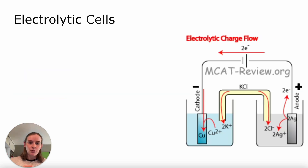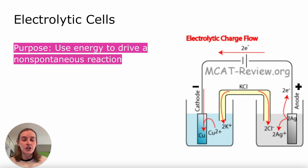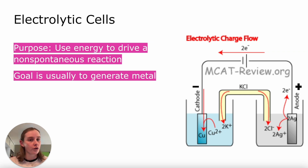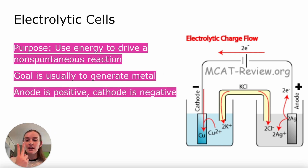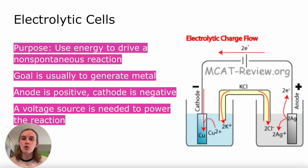Next, electrolytic cells. The purpose of these cells is to use energy to drive a non-spontaneous reaction — often to generate a metal or some substance that might be valuable for later use. Here, as I mentioned, it is flipped: the cathode is now negative and the anode is the positive electrode. Because a non-spontaneous reaction is occurring, you are going to need a voltage source to power that reaction, since if it's non-spontaneous it won't occur on its own — you need to input voltage or energy to drive it forward.